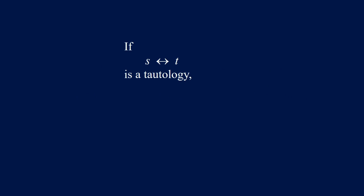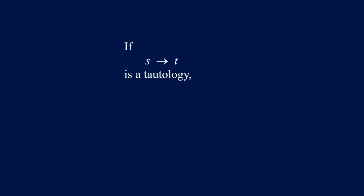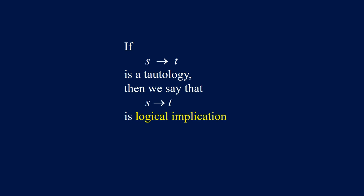If S if and only if T is a tautology, then we say that it is logically equivalent, and we write using this symbol. And if S implies Q is a tautology, then we say that it is a logical implication, and we write using this symbol.